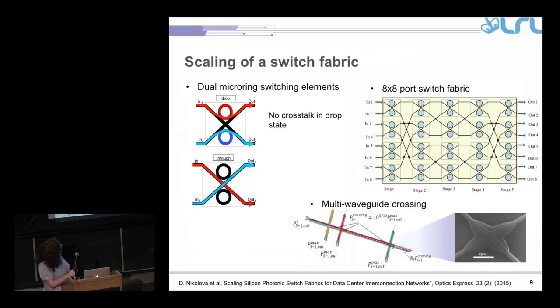To avoid this crosstalk effect, we have studied switching elements with two rings. In this way, when the two rings are on resonance with the signal, then it's going to be in drop state. And when the two rings are off resonance, they're going to go to the different ports. What we found is that in this case, there is no crosstalk for a specific optimal parameters.